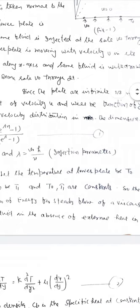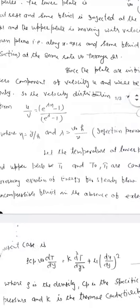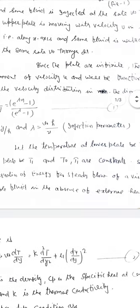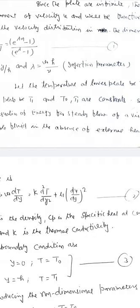Since the plates are infinite, the non-zero component of velocity is u and is a function of y only. The velocity distribution in dimensionless form is given by u/U = (e^(λn) − 1)/(e^λ − 1), where n = y/h and λ is the injection parameter defined as λ = V0·h/ν, where ν is the kinematic viscosity.